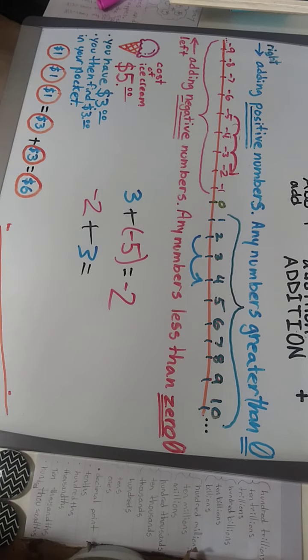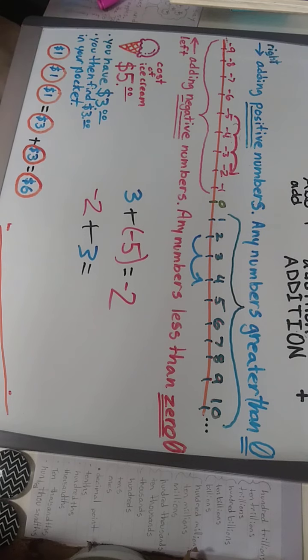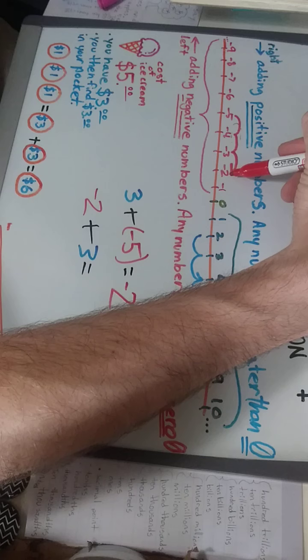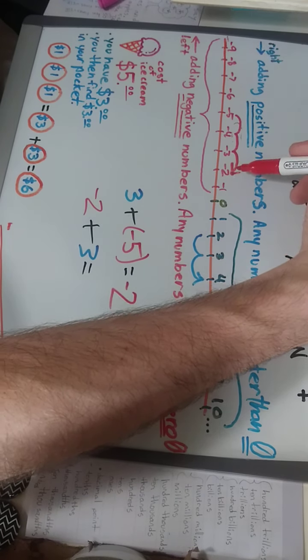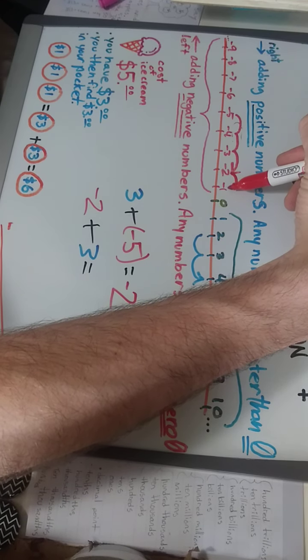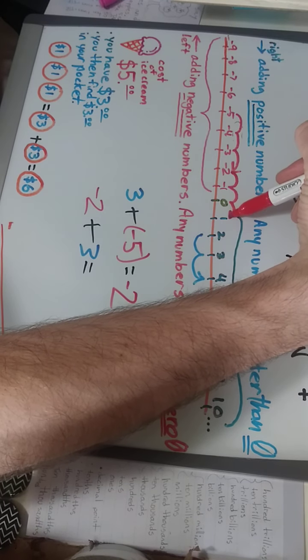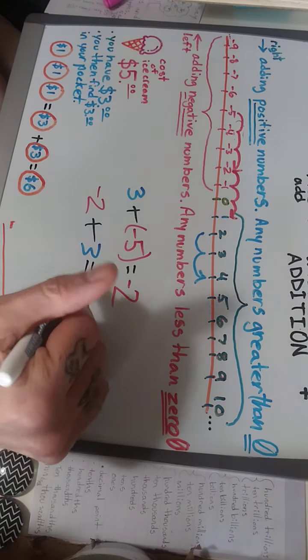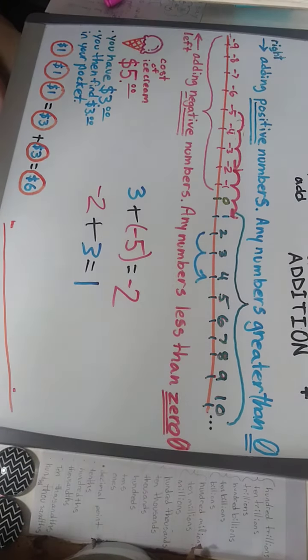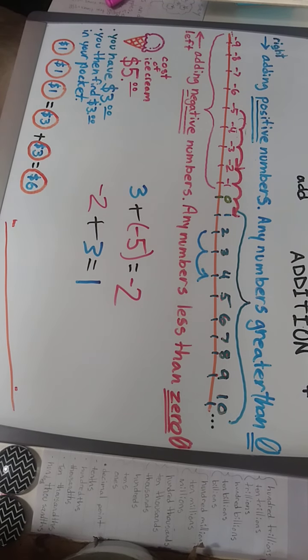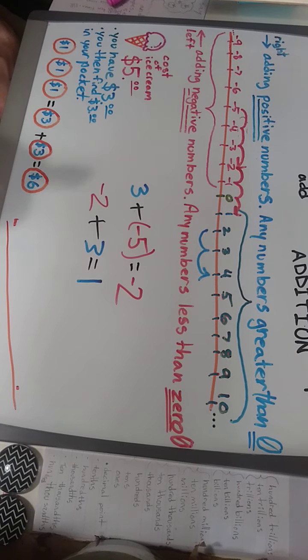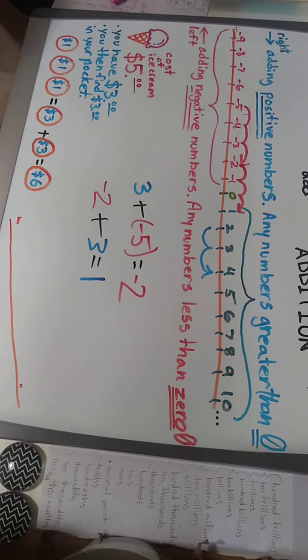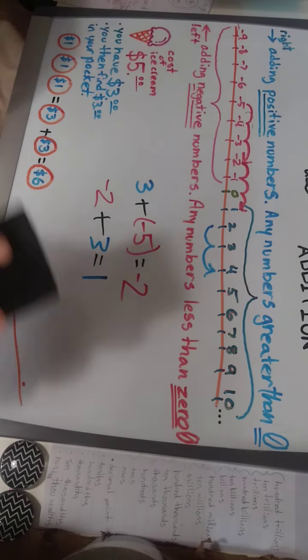So negative two plus three - we start at negative two dollars. We need two more dollars, but we have three dollars. So we move over three: one, two, three. That leaves us with an extra dollar. So we have one dollar too much. So we can buy that ice cream, and the store owner would give us back a dollar if we gave him six.